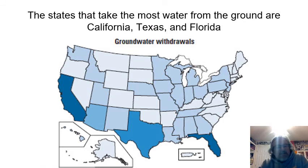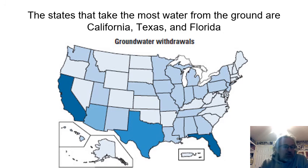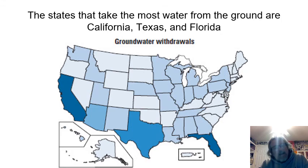Some states use a lot of groundwater — California, Texas, and Florida especially. The reason those three use so much is they all have growing seasons that are a lot longer because they're very far south. They have a lot of agricultural products that need water. California doesn't get much rain, yet they grow crops like crazy because they have year-round sunshine — but those crops need water, so they have to get it out of the ground.